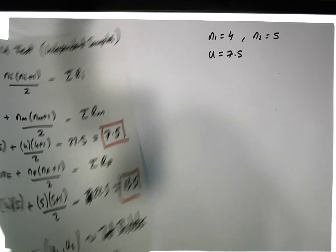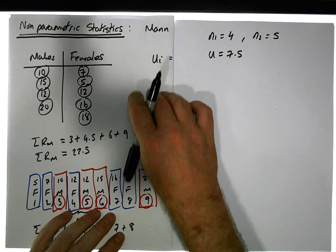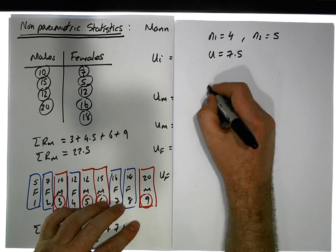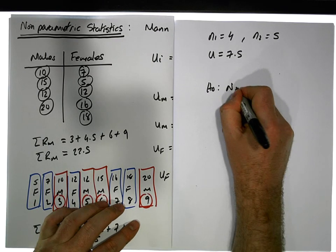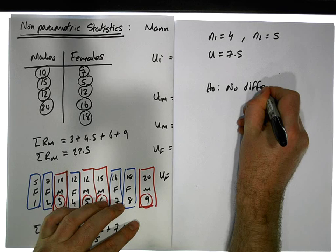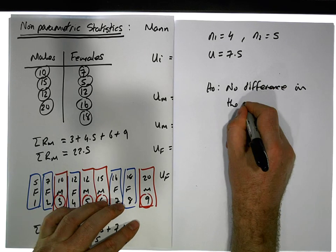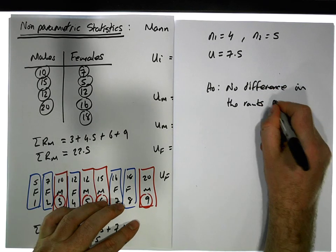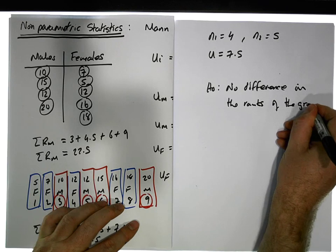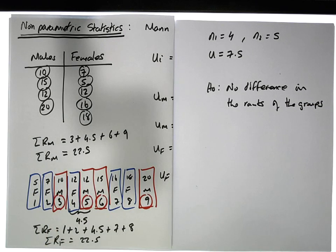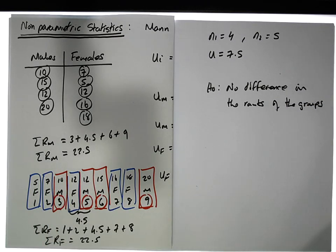And we have the U statistic is equal to 7.5, that's the smaller of the two of them. We need to set up our hypothesis itself. The null position H0 is that there's no difference in the ranks of the groups.